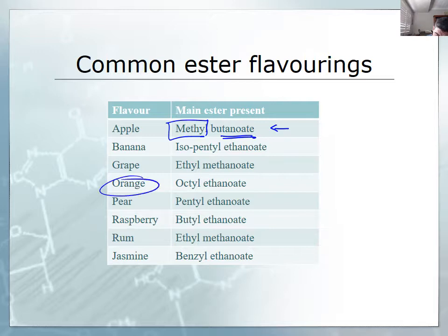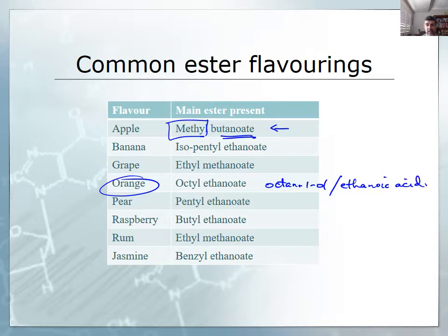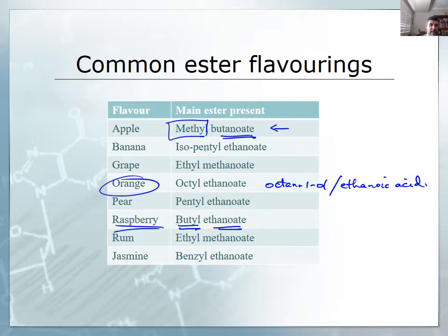Likewise, orange flavouring comes from octanol and ethanoic acid. Each time you look at these esters now, you should be able to see not only the name and where it comes from and how you might draw that structure, but also how you might think about the reactants — for example, raspberry flavouring comes from butanol and ethanoic acid as the two reactants that combine together to form that particular flavouring.